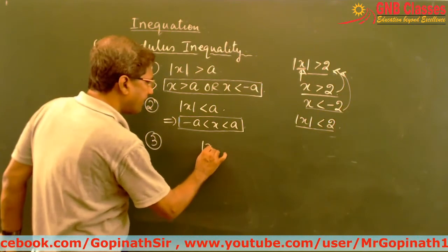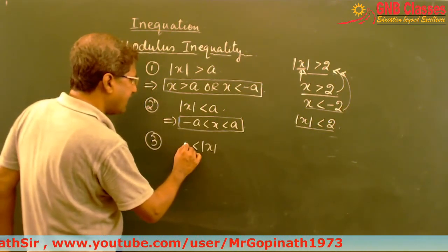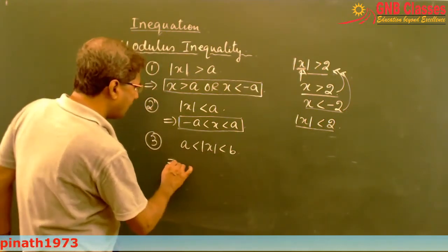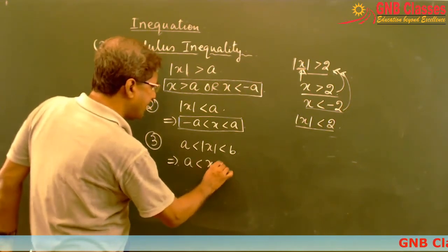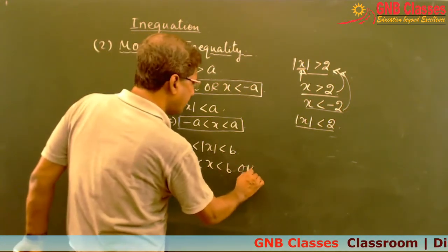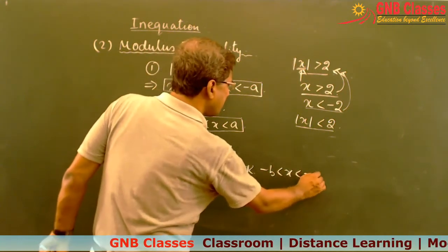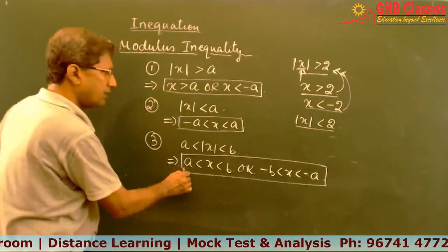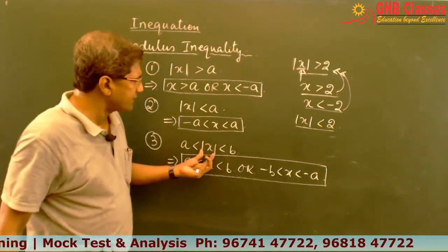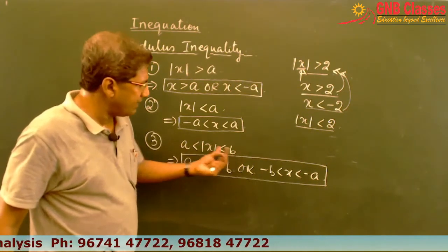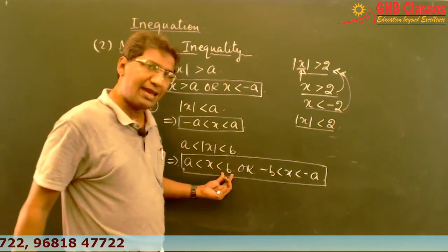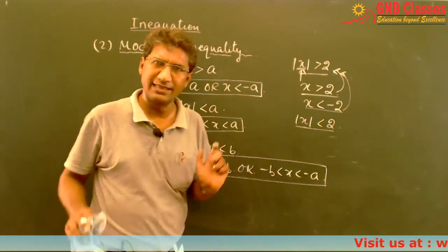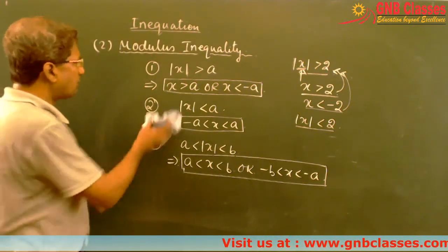The third formula — combining the two: if mod x is greater than a and less than b, we can write this as x lying between a and b, or x lying between minus b and minus a. This is a very important inequality formula.